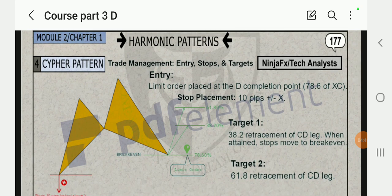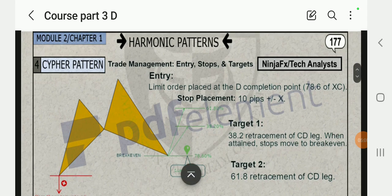Trade management: Entry, stops, and targets. Entry limit order placed at D completion point, 78.6 percent of XC. So when I say limit order, I'm just gonna clarify for people. A limit order is a pending order you set in the market. In this case, limit order placed at D completion point 78.6 level.